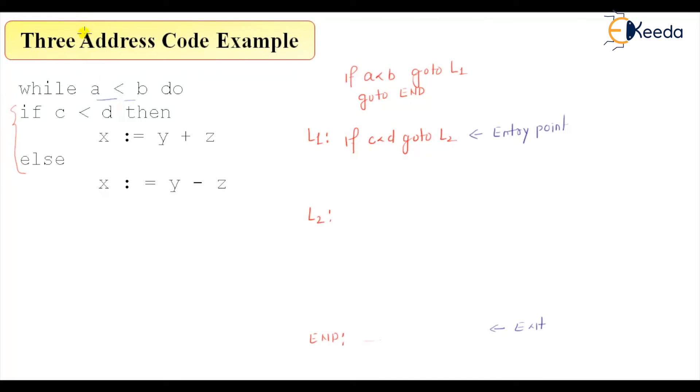Ideally it looks like a three address code x equal to y plus z, but when you look at the syntax tree, there will be an equal to, and then there will be x, there will be plus, and there will be y and there will be z. So here it will finally be translated into t1 is equal to y plus z, and then x equal to t1. So the tree traversal will translate into this.